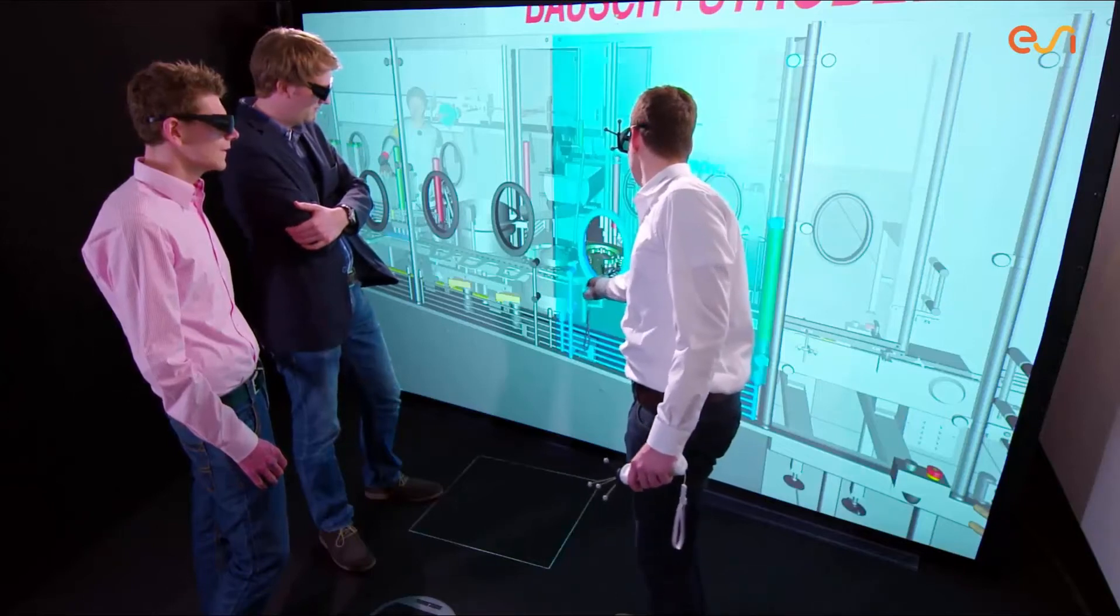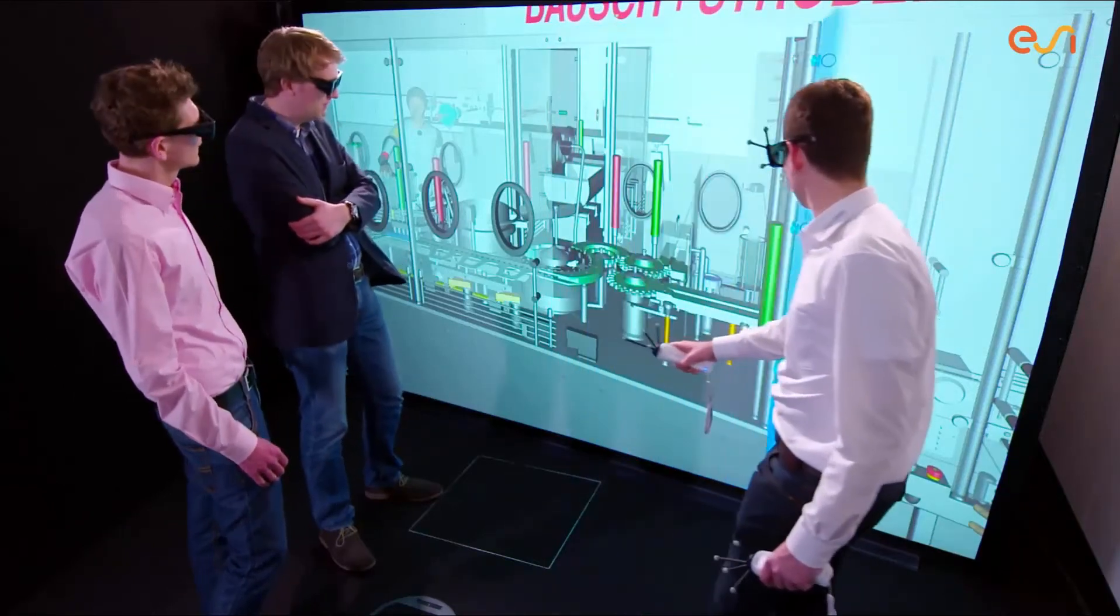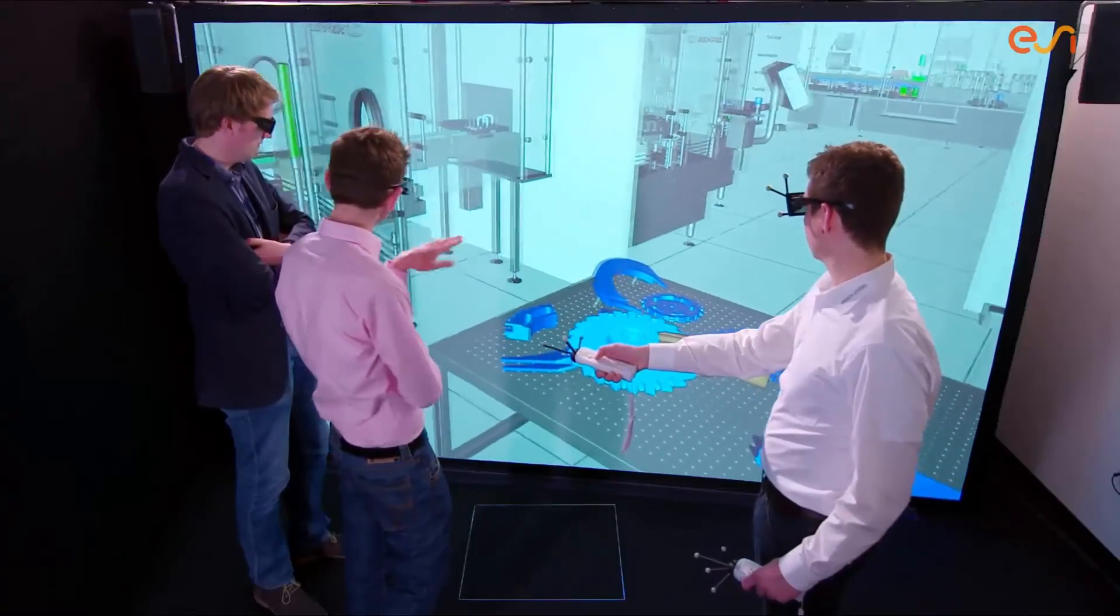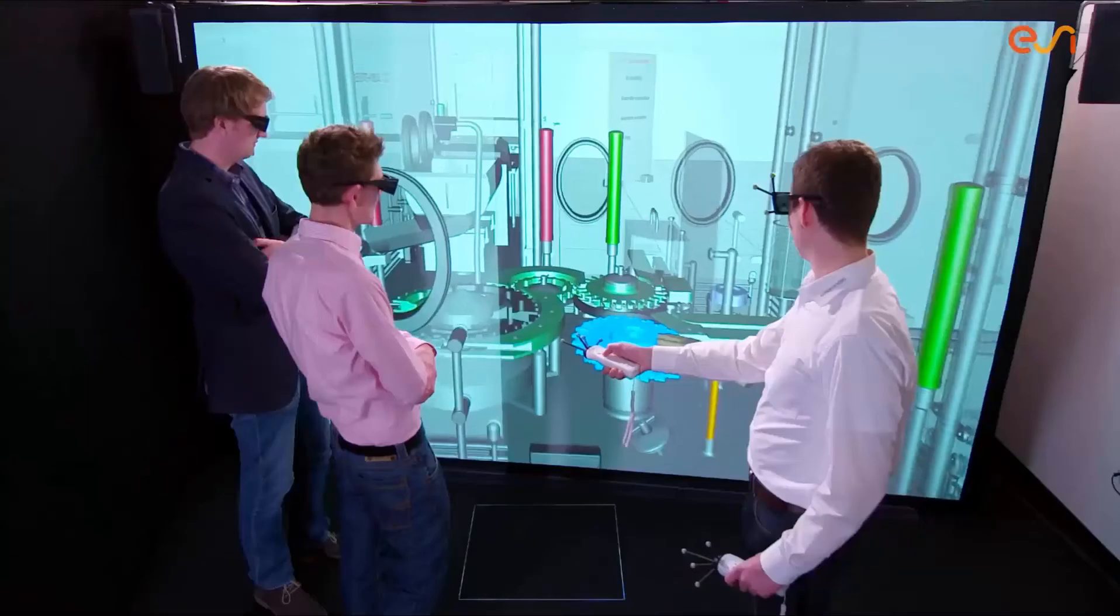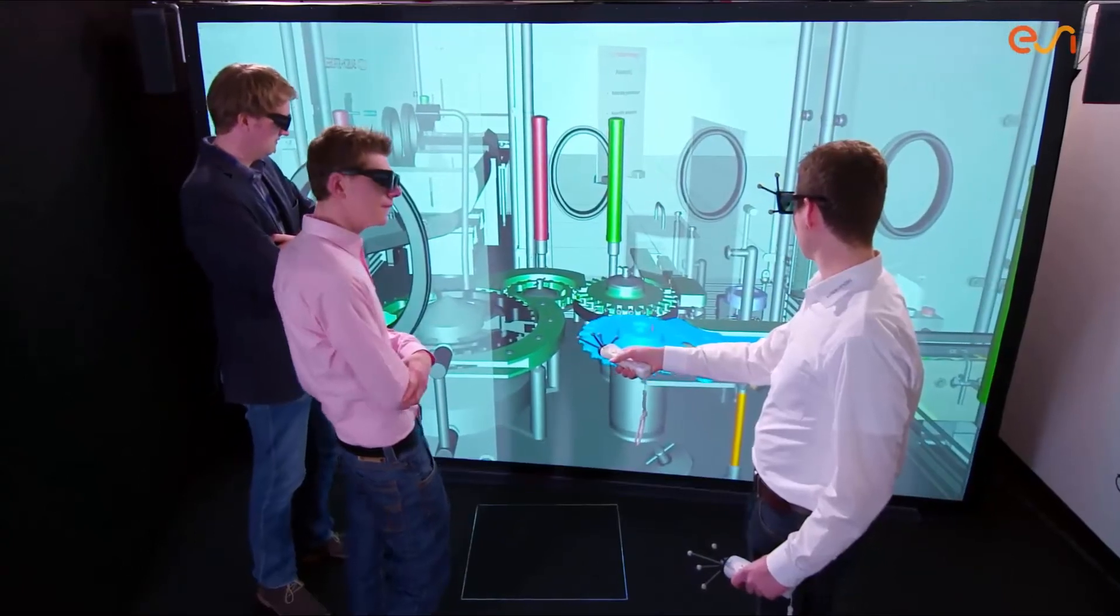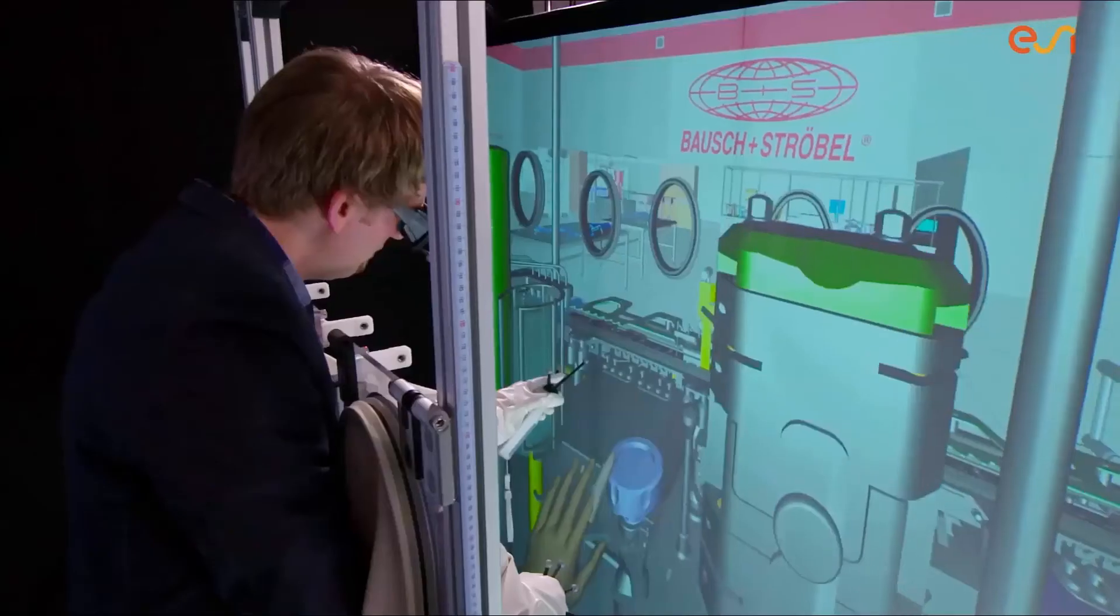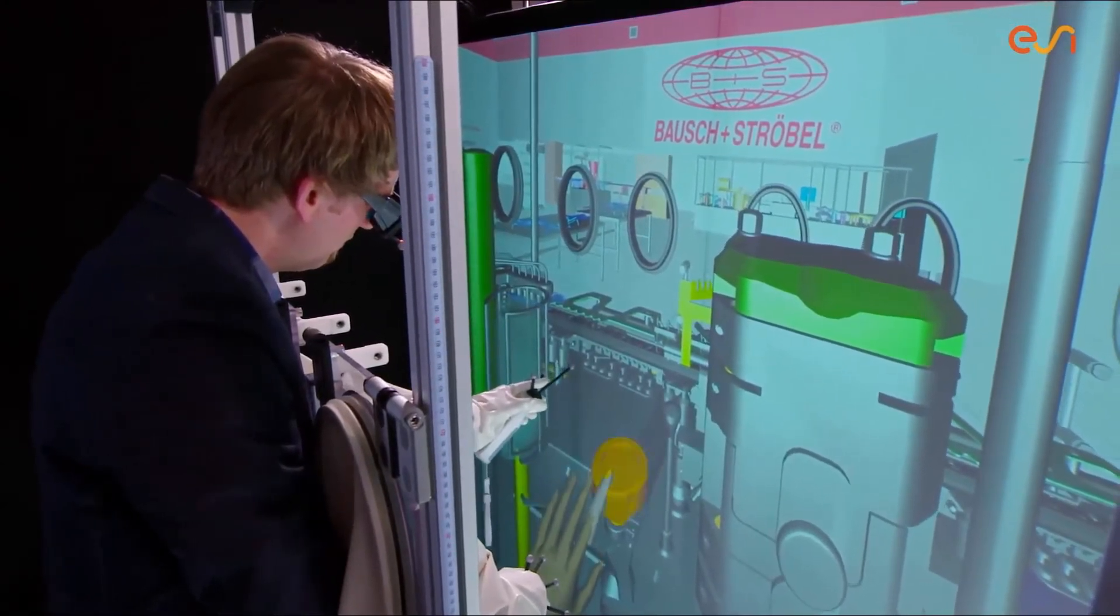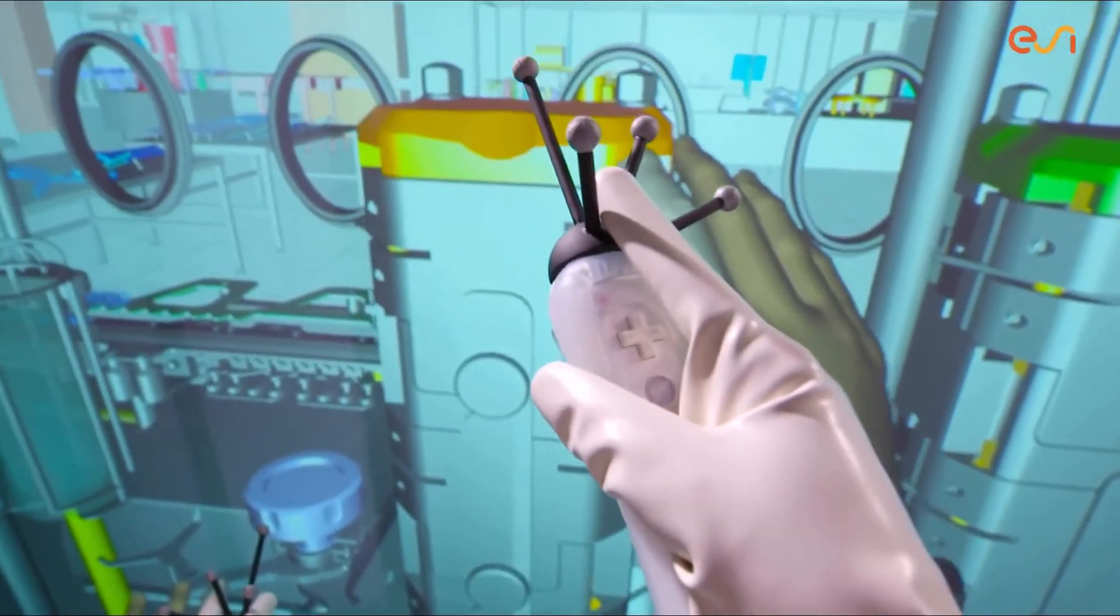iSee iDo enables Bausch & Ströbel engineers to predict usability issues early in the development process. Using iSee iDo, they can simulate assembly and disassembly sequences of their machines, check the reachability of control elements, operate design reviews and predict possible ergonomic issues.